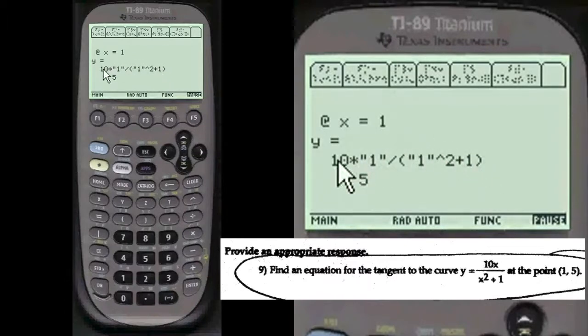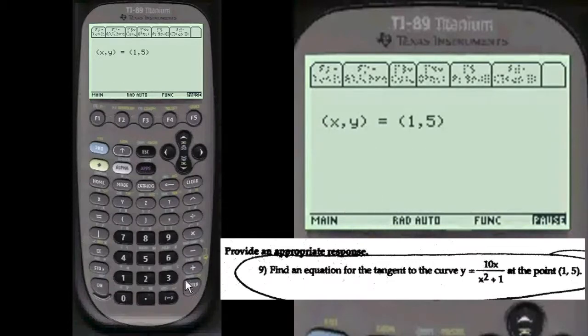So now at x equals 1, we need to find out what y would be. So we put that into the original function, and turns out y is equal to 5, which is what they told you in the first place, x and y is equal to 1 to 5.